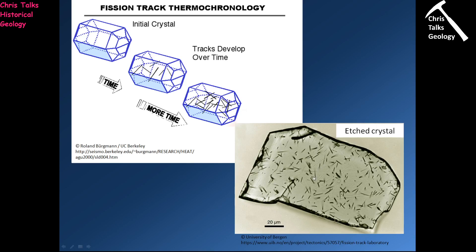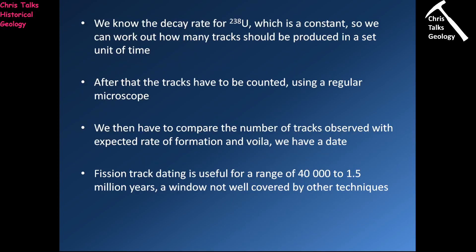Fission track dating is a very simple and cost-effective technique. However, it does have a couple of minor problems. First, apatite is not a particularly robust mineral and can get damaged quite easily. Also, fission track dating is useful only for a relatively short window — you can date material between 40,000 and 1.5 million years old. Outside that window the technique isn't really usable, so you can only use it to date rather young material.